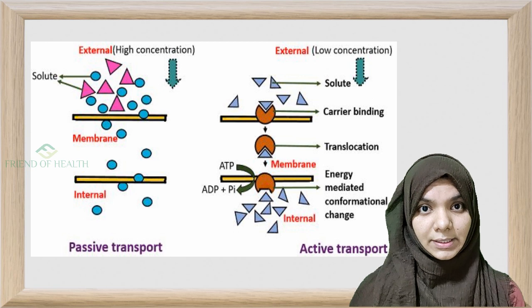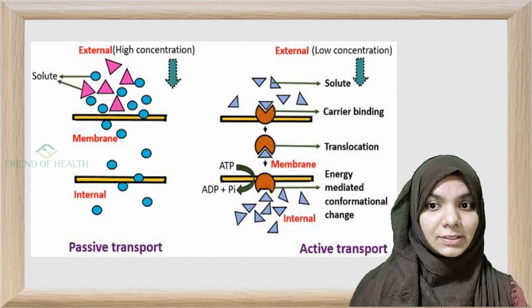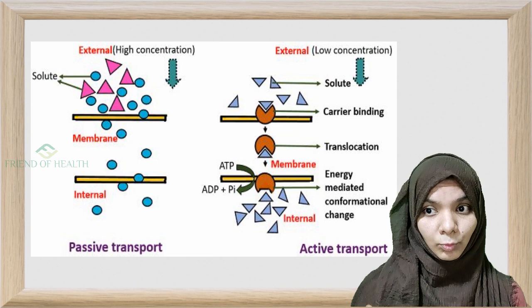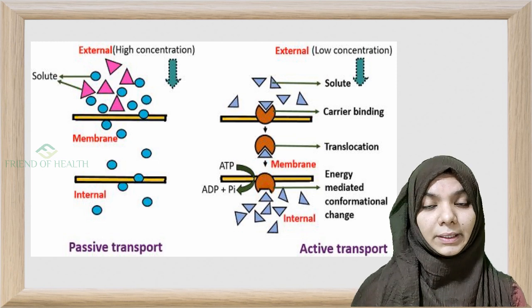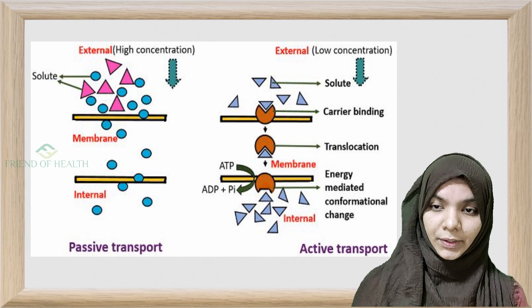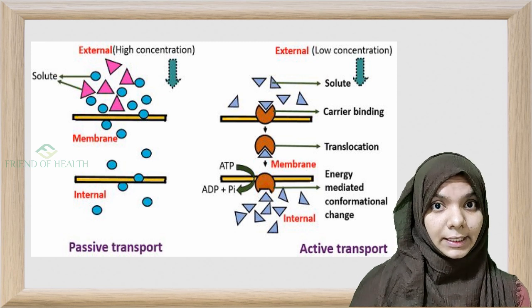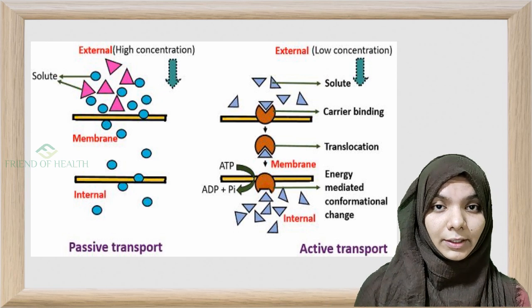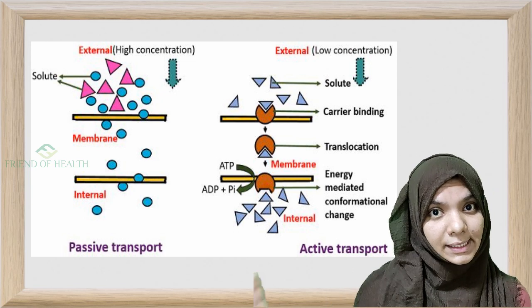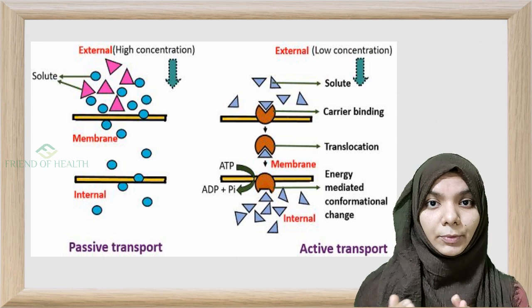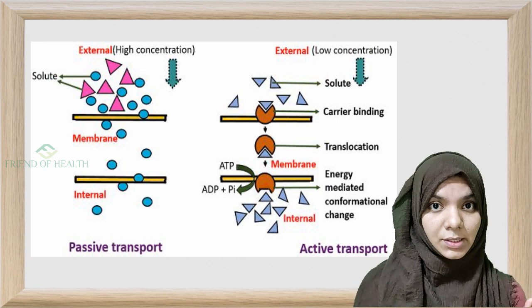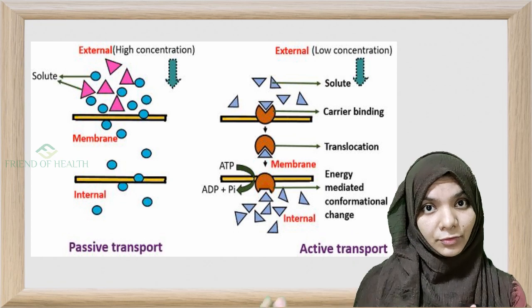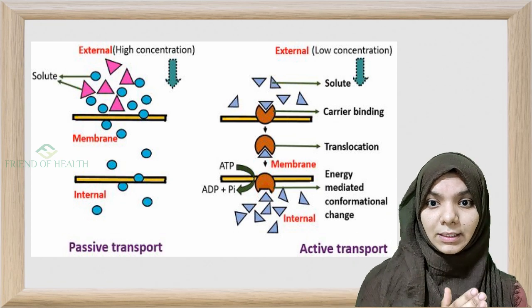Active transport is the movement of molecules across the cell membrane from a region of low concentration to a region of high concentration — that is, against the concentration gradient. In the sodium-potassium pump, sodium moves from the intracellular fluid to the extracellular fluid, moving from low to high concentration. This is what is known as active transport, and therefore the sodium-potassium pump is an active transport mechanism.